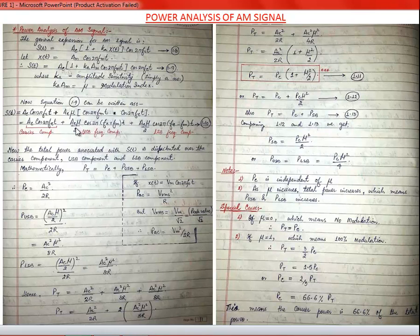Plus (A_C·μ/2)·cos(2π·(f_c − f_m)·t) — the lower sideband component. The upper and lower sidebands arise by applying the product-to-sum formula: cos(A)·cos(B) = [cos(A+B) + cos(A−B)] / 2.